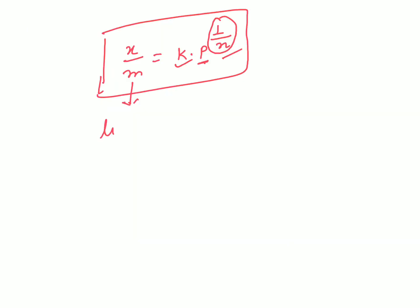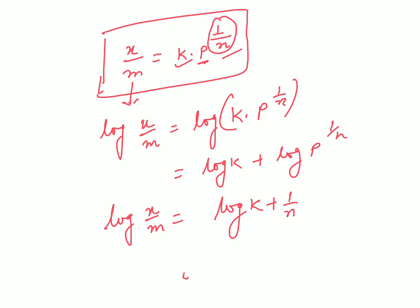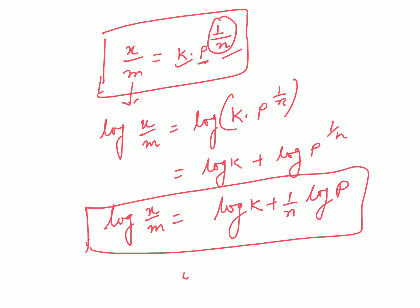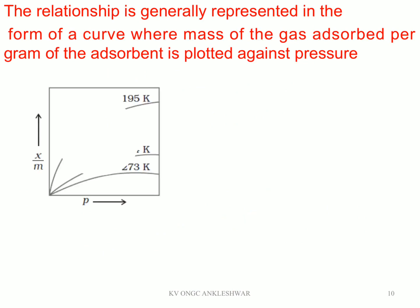Taking logarithm on both sides of the Freundlich equation: log(x/m) = log(k × P^(1/n)), which becomes log(x/m) = log k + (1/n) × log P. This is another way of writing the adsorption isotherm in logarithmic form — a straight line equation useful for graphical analysis.